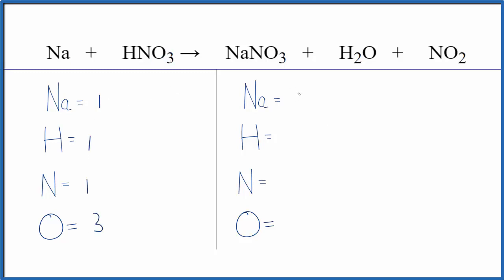For the products, we have the one sodium, and then hydrogens, we have two of those. Nitrogens, be careful, we have one here and one here. So we have a total of two nitrogen atoms. For oxygen, we have three plus the one plus two. So three plus one plus two, that gives us six oxygen atoms.